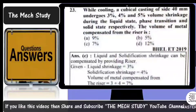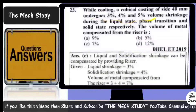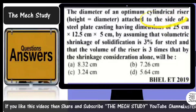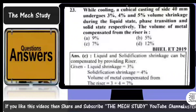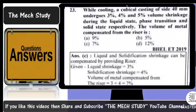The first question: while cooling, a cubical casting of side 40 mm undergoes three percent, four percent, and five percent volume shrinkage during the liquid state, phase transition, and solid state respectively. Find the volume of metal compensated by the riser.